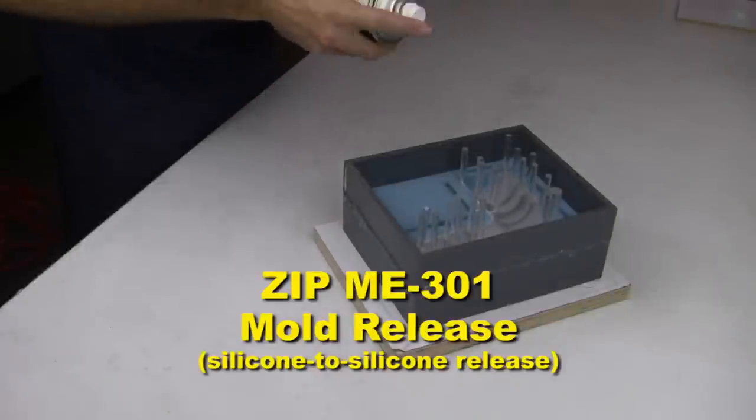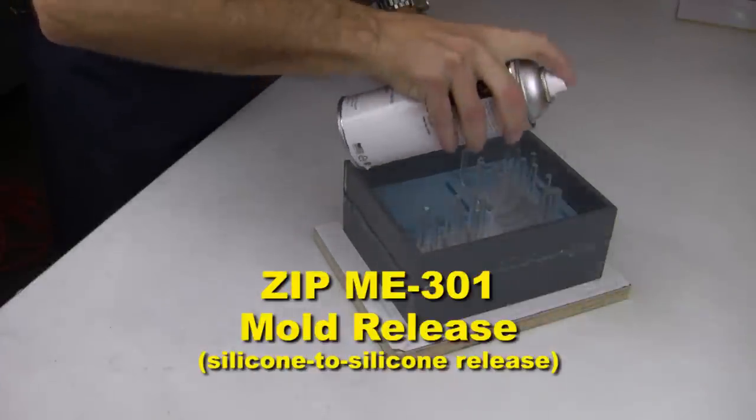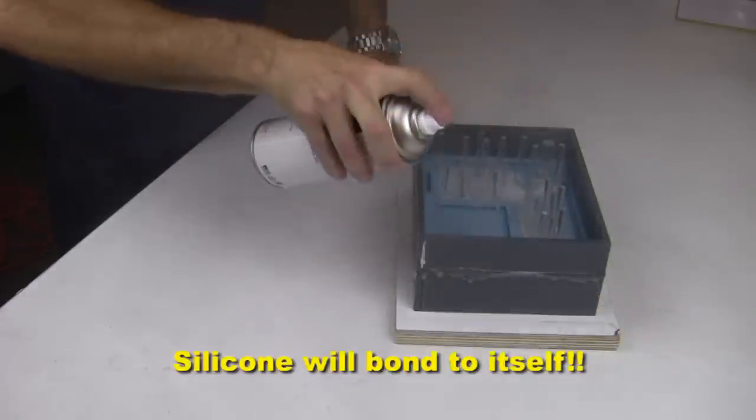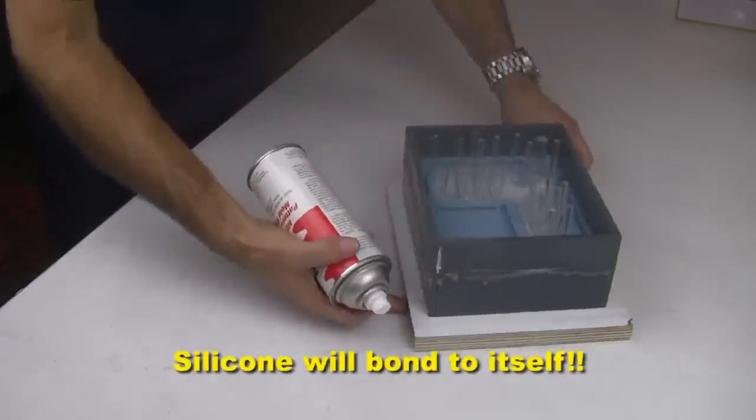Lastly, we apply our mold release to the exposed surfaces to ensure the two halves separate later on. Remember, silicone will bond to itself but does not bond to plastic surfaces.